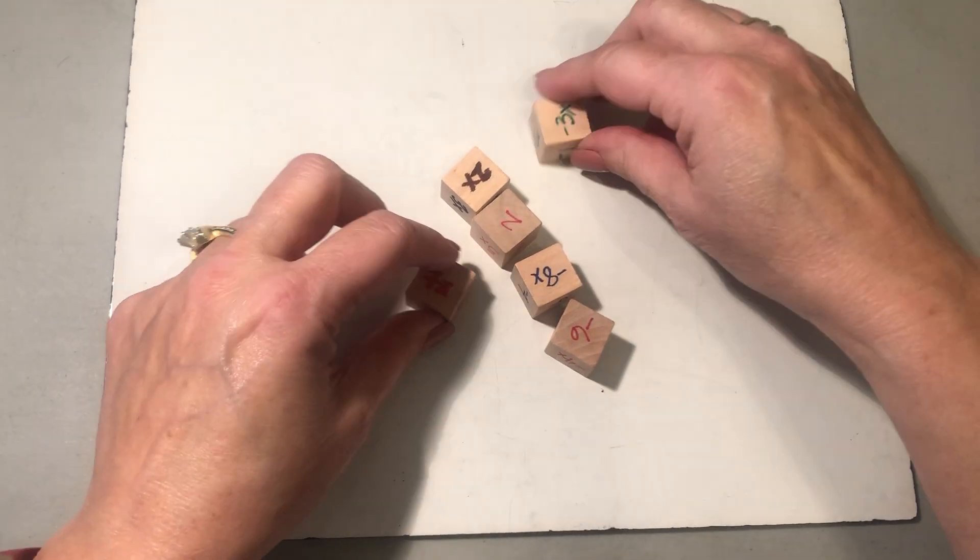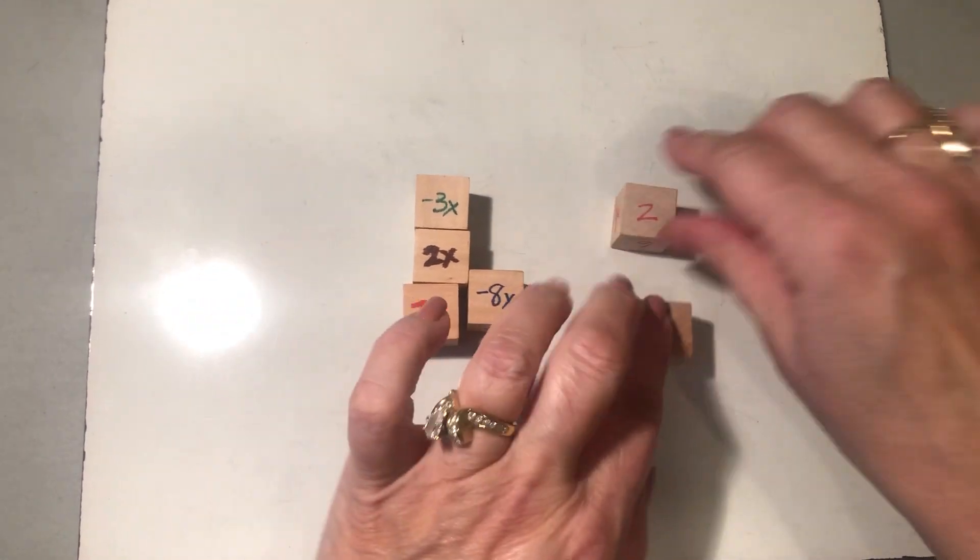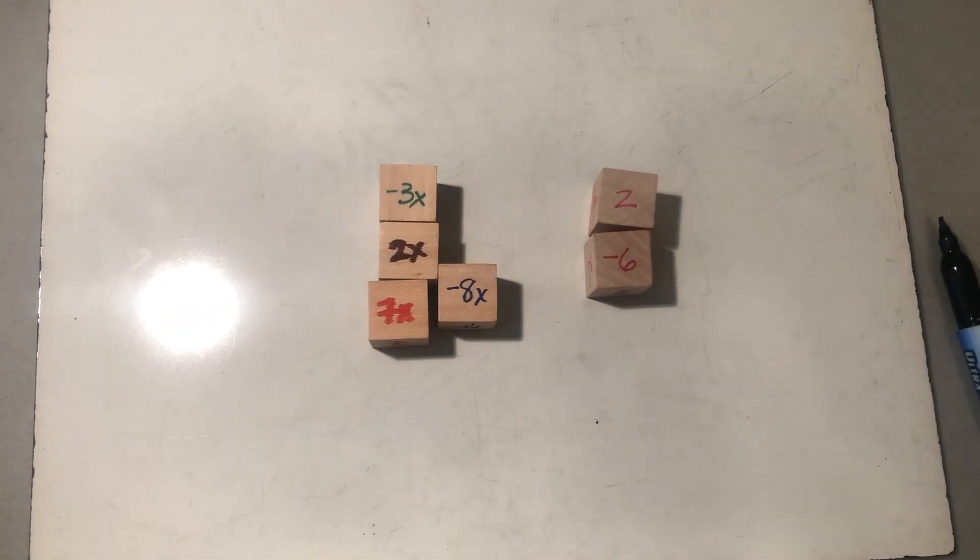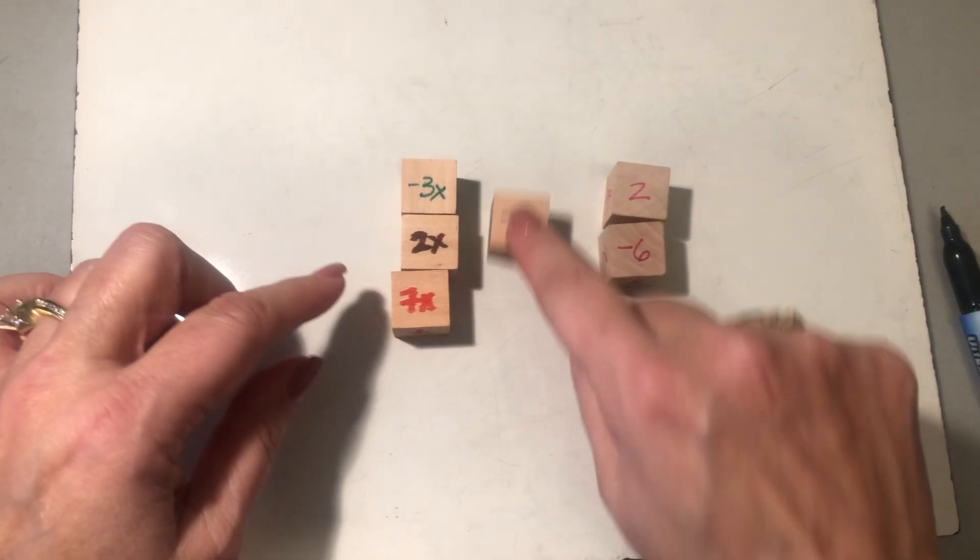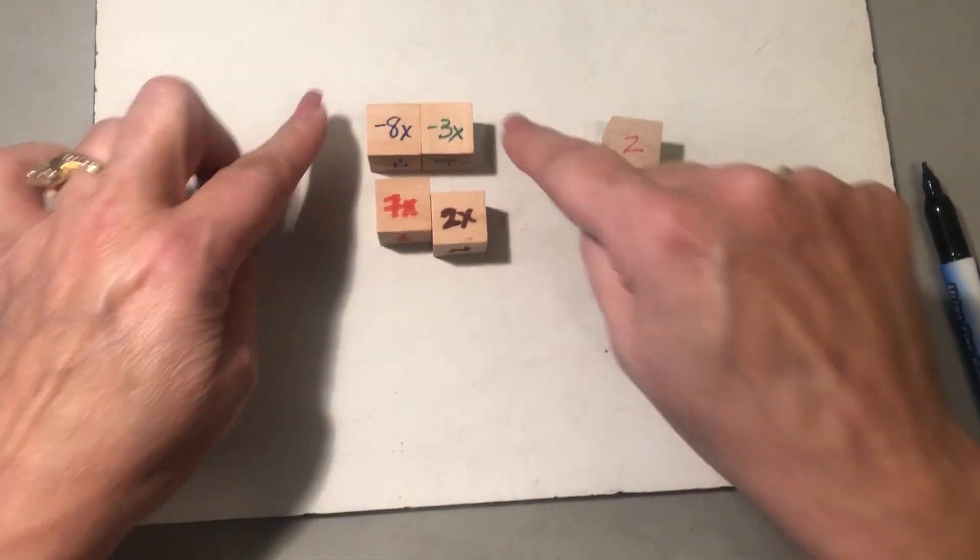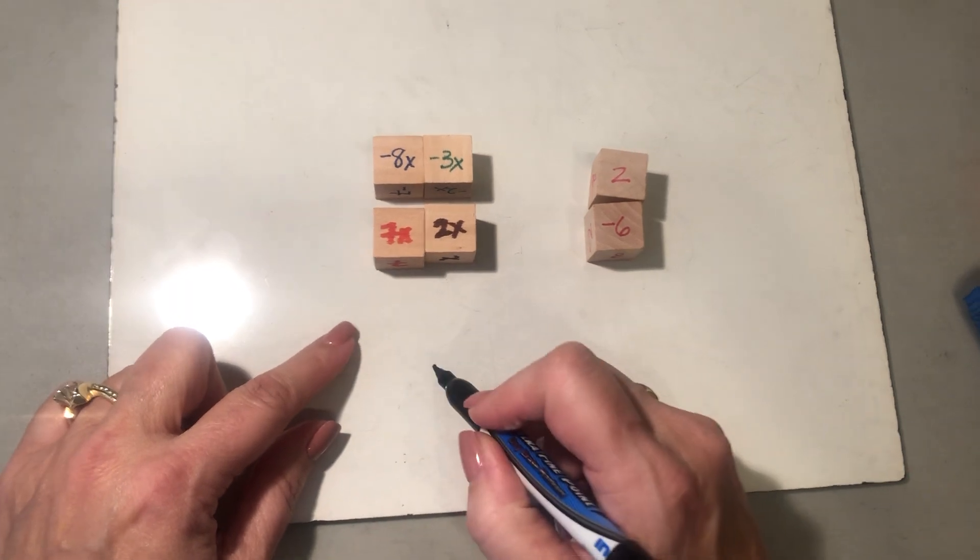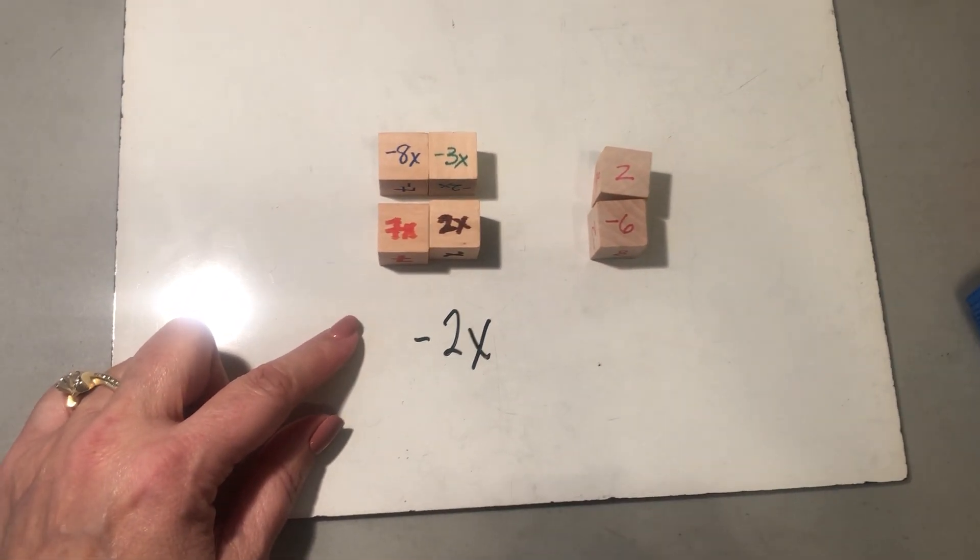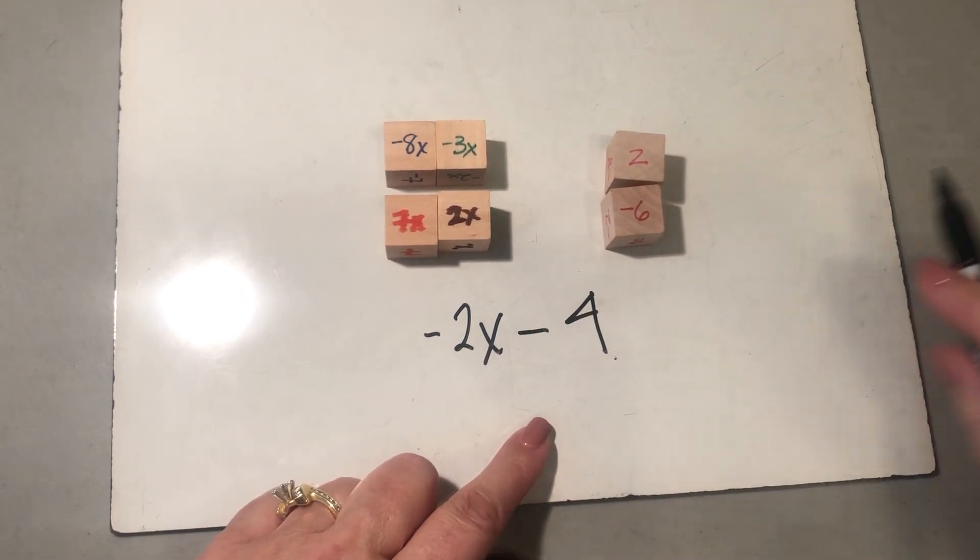I'm going to sort them around. Put all the x terms together, the numbers. Okay, we're going to combine them. Here I have negative 11 and positive 9, so it gives me negative 2x. And then here I have a negative 6 and a positive 2 which gives me negative 4.